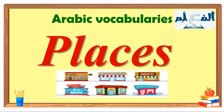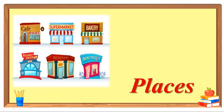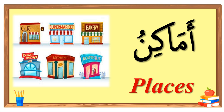Today we are going to study the names of places in Arabic language. The meaning of places — places means amakinu. Like school, like market, like a cafe, like a restaurant, like a bus station — all these are amakinu.